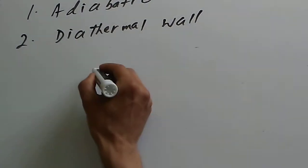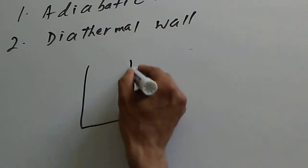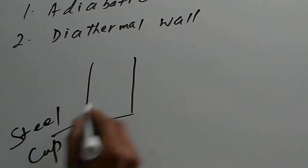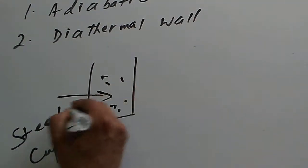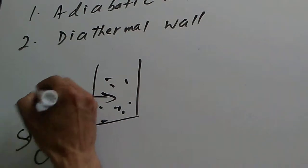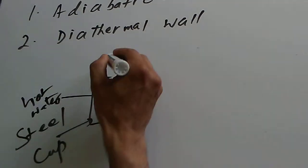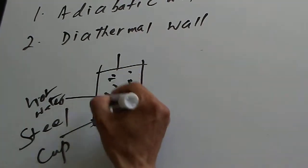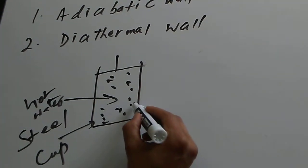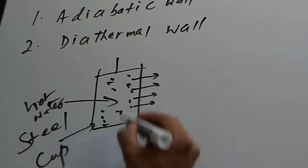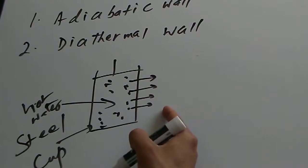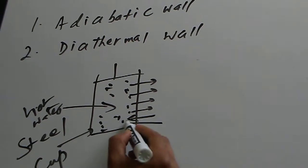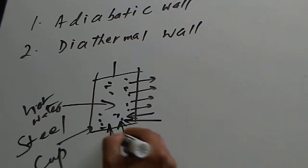Now let's talk about the diathermal wall. Suppose we have a container made of steel — a steel cup — with hot water inside, and we close the lid. The wall made of steel slowly allows heat to go out from inside to outside. If the outside is very hot, it also allows heat to go into the system.